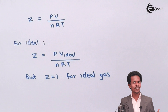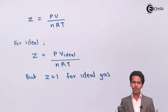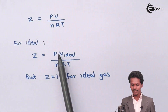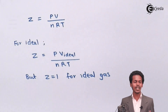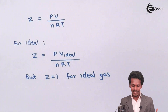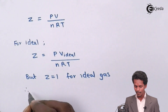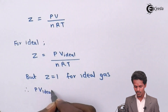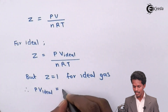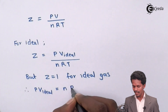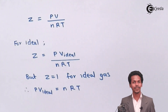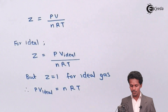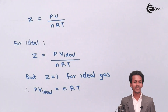This is because, if we know that the ideal gas equation is PV equals nRT, then for this equation to hold, the value of Z must be 1. So PV ideal equals nRT, confirming that Z equals 1 for an ideal gas.